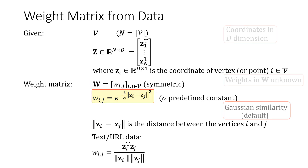Now for text data, we have another expression. Wij here is the inner product between zi and zj divided by their norms. This is called the cosine measure of similarity. It is used in text and URL data.